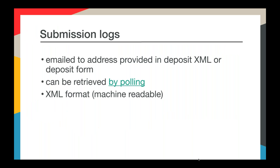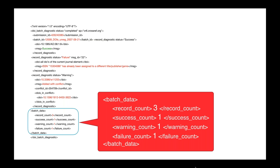We generate a log for every file sent to our system and send these logs out by email. You can also poll us for the logs if you have a system that can support that. The logs are in XML, so they're machine-readable and somewhat person-readable. The important part of the submission log is at the bottom — the batch data section is a summary of your log results. If the record count and success count match, everything was processed successfully. If there are any failures, they're flagged in failure count and you'll need to find those error messages and address them. A failure means your record was not added to our system. Warnings mean your record was added and the identifiers are registered, so your DOIs are available for linking, but there's something within your submission that needs extra attention.